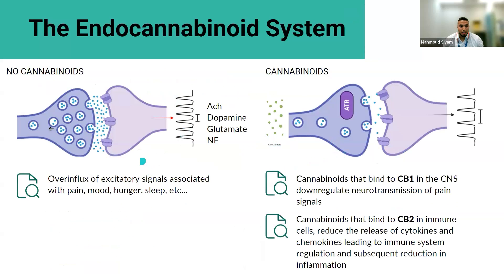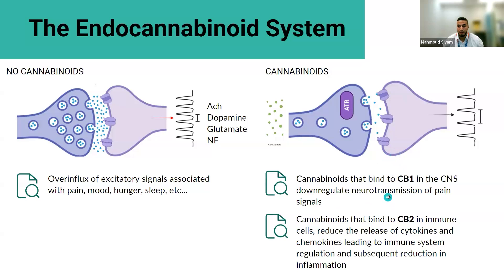Without cannabinoids to deal with a large influx of hormones at the synaptic level, you get overproduction of acetylcholine, dopaminergic, glutaminergic, or noradrenergic signals, which are associated with pain, mood, hunger, and sleep. In the presence of cannabinoids, you get a dampening down of this response. Cannabinoids binding to CB1 in the CNS can downregulate neurotransmission of pain signals, whereas cannabinoids binding to CB2 in immune cells can regulate the inflammatory response.